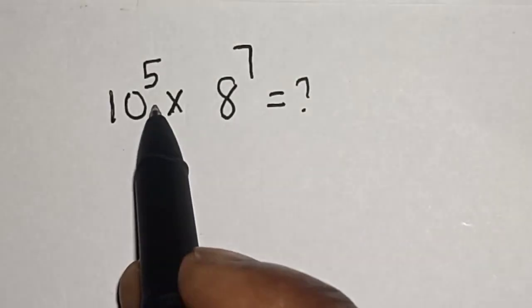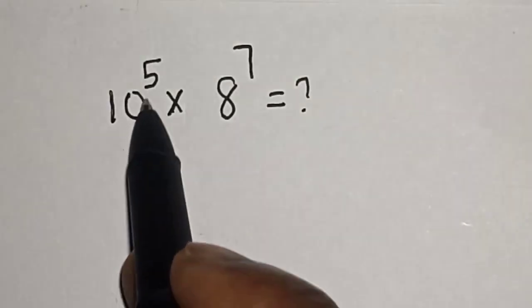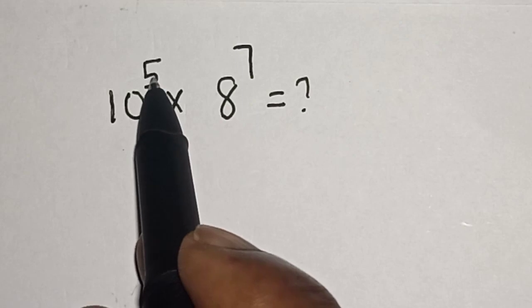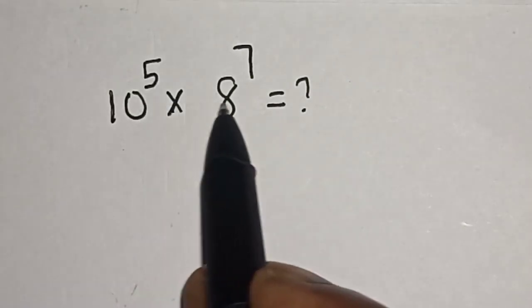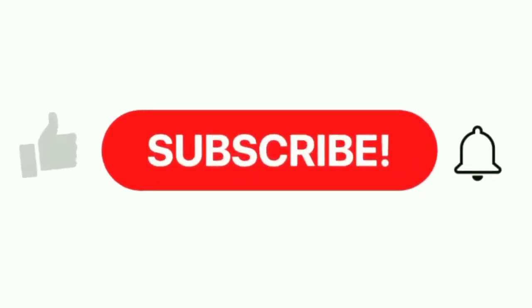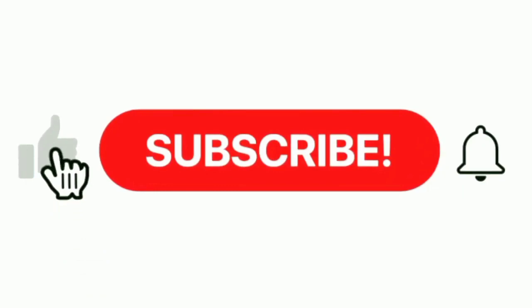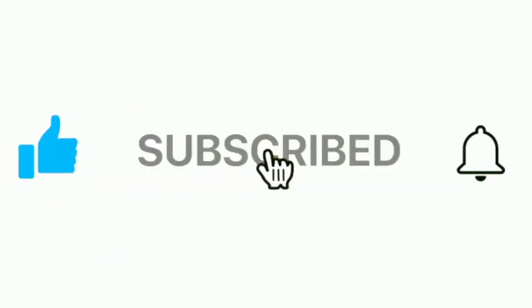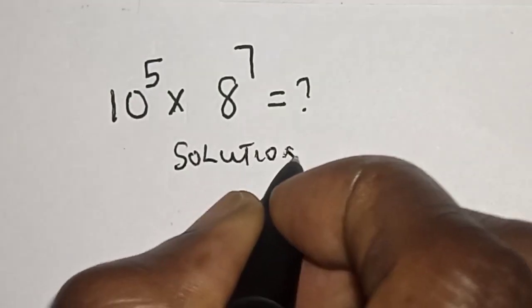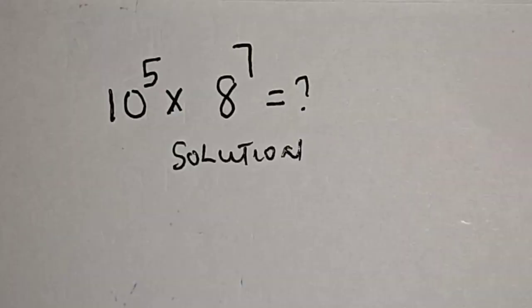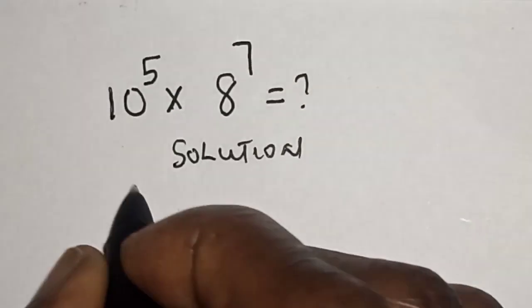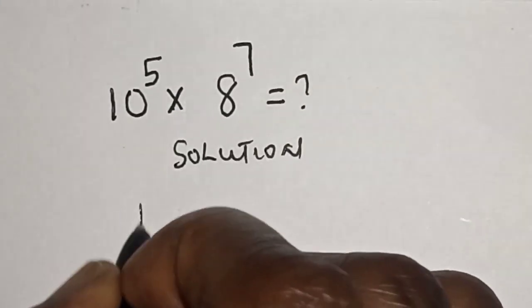Hello, welcome to Math Gist. In this class we want to evaluate this math problem: 10 raised to power 5 multiplied by 8 raised to power 7. What is it equal to? Like, share, comment and subscribe. Solution: 10 raised to power 5 multiplied by 8 raised to power 7.